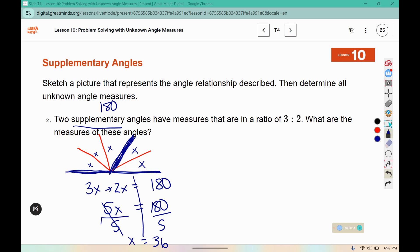But we have to determine the measures of those angles. So 36 plus 36 plus 36 would tell us the angle that has the ratio for the 3 piece, and then 36 plus 36 would tell us the 2nd angle. And if we check, 108 plus 72 does make 180.